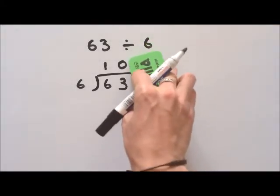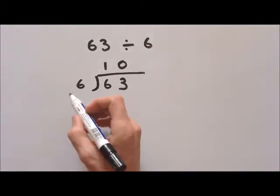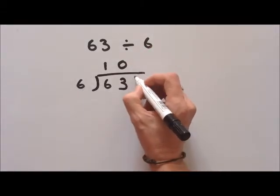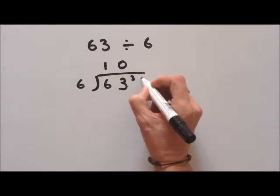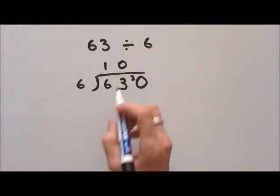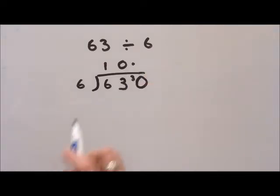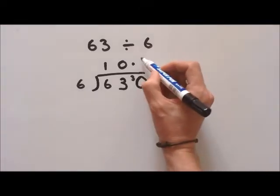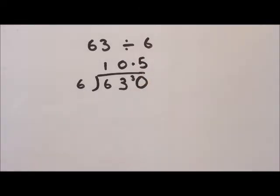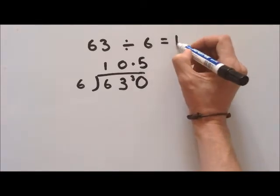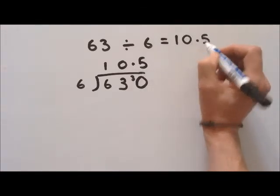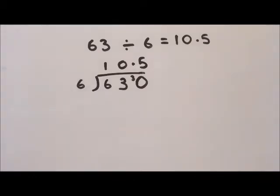Now we have three remainder. Previously we would have written remainder three, but now I'm going to show you how to turn this into a decimal number. We place our remainder here, put a zero next to it, and put a decimal point — that's really important. How many sixes come out of thirty? Five times six is thirty, so you get five. And there you have it: the answer is 10.5.